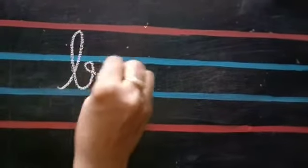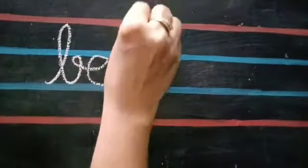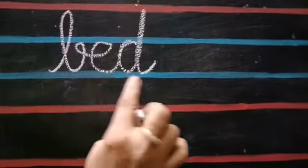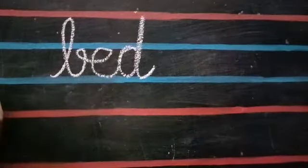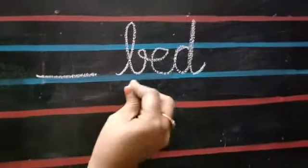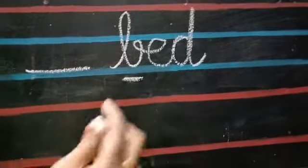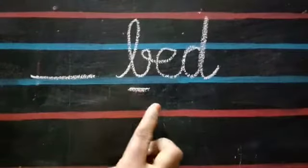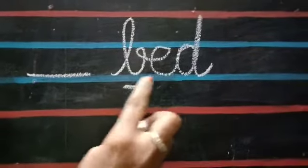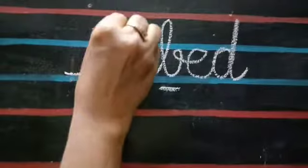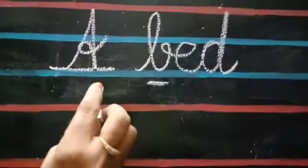Now, B, E, D — BELT. Children, what should I use here? A or AN? Check the first letter. Is B a vowel? No. If the first letter of the word is not a vowel, you should write only A. A, BELT.